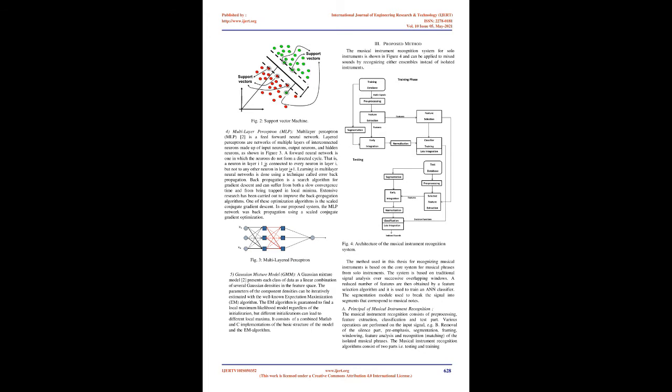The problem with the KNN classifier is that it is sensitive to irrelevant features that may dominate the distance metric. In addition, the calculation requires significant computational load if a large number of training instances is stored. Multi-layer Perceptron (MLP): MLP is a feed-forward neural network. Layered perceptrons are networks of multiple layers of interconnected neurons made up of input neurons, output neurons, and hidden neurons, as shown in Figure 3.